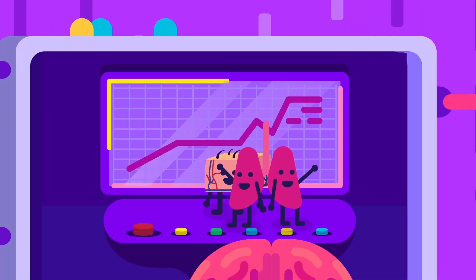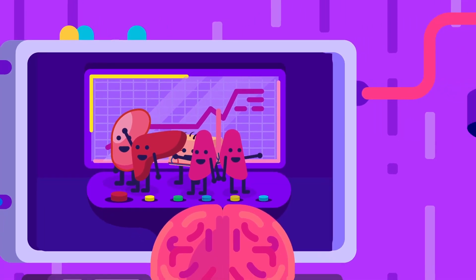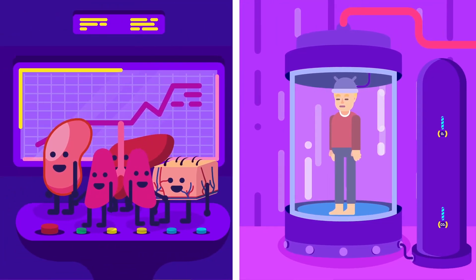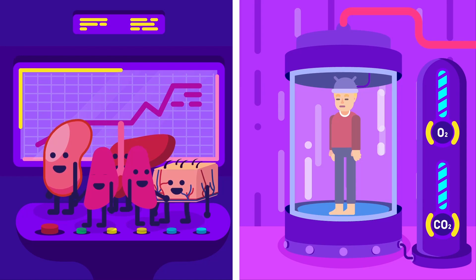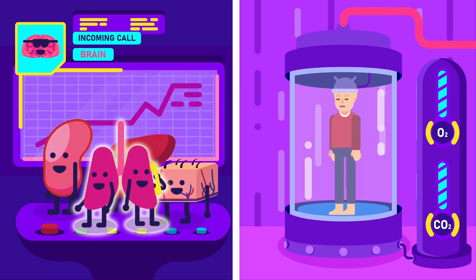Lungs, skin, liver, and our kidneys help us maintain homeostasis. The lungs regulate carbon dioxide and oxygen with the help of the respiratory center of the brain.